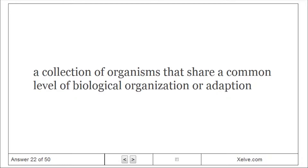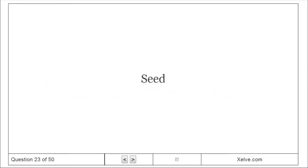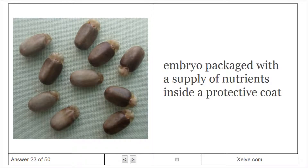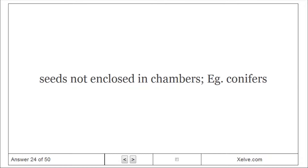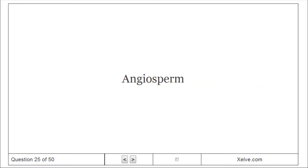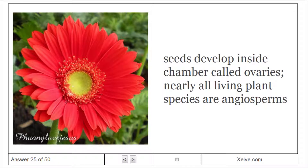Grade: A collection of organisms that share a common level of biological organization or adaptation. Seed: An embryo packaged with a supply of nutrients inside a protective coat. Gymnosperms: Seeds not enclosed in chambers, e.g. conifers. Angiosperms: Seeds develop inside a chamber called an ovary. Nearly all living plant species are angiosperms.